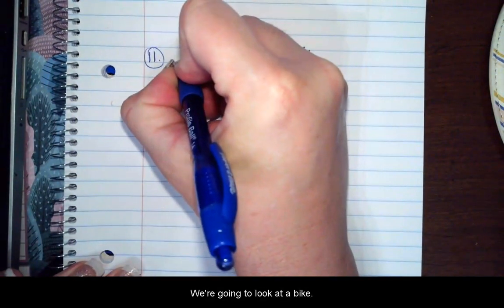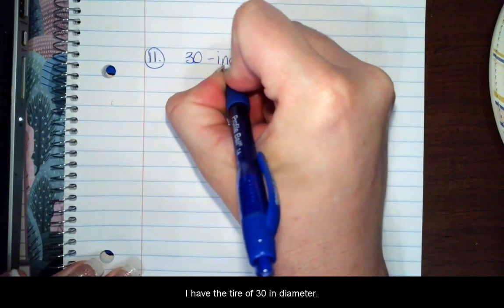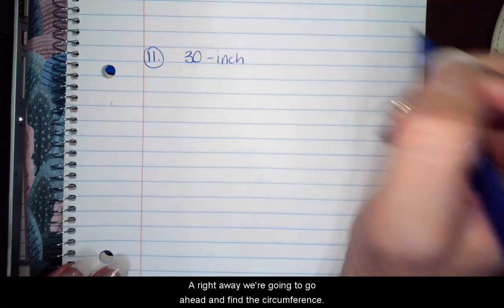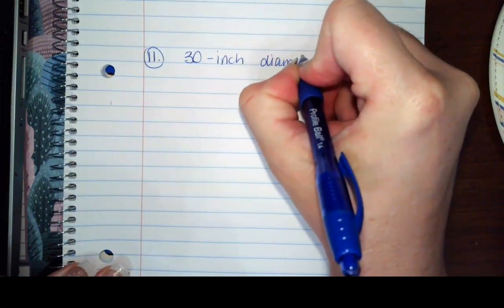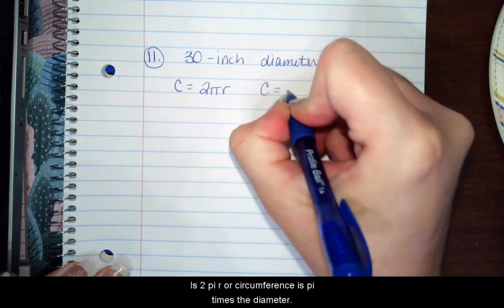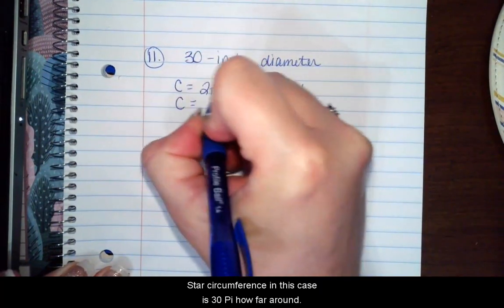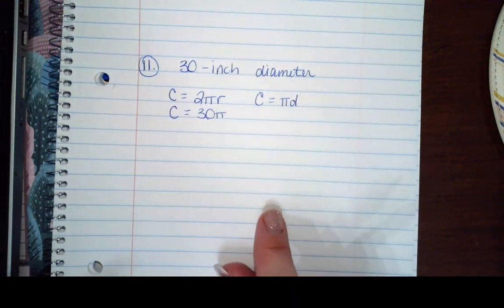For problem number 11, we're going to look at a bike that has a tire of 30 inches diameter and right away, we're going to find the circumference. So circumference is 2πr or circumference is π times the diameter. So our circumference in this case is 30π. That's how far around this thing is going to go.